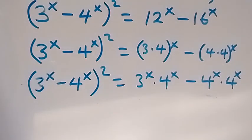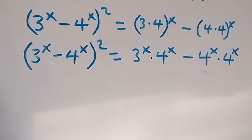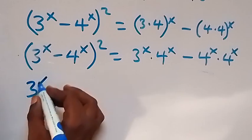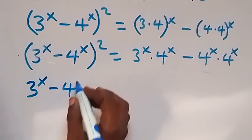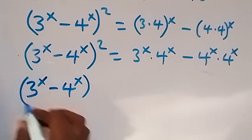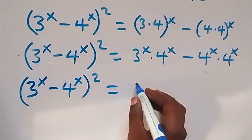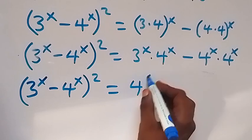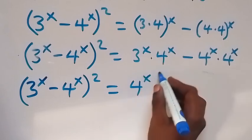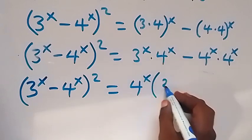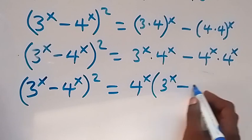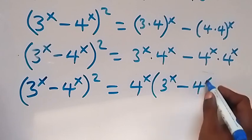On the right hand side we have 4 raised to power x common, so when we factor 4 raised to power x out, this equation will become 3 raised to power x minus 4 raised to power x, all squared, equals to 4 raised to power x times bracket 3 raised to power x minus 4 raised to power x.